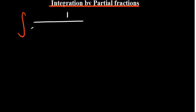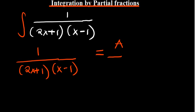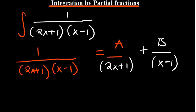Let's say you have the integral of 1 divided by (2x+1)(x-1). We're able to resolve this fraction into its partial fractions. Forgetting about the integral first, we have 1 over (2x+1)(x-1) which we equate to A over (2x+1) plus B over (x-1). We're trying to find what A and B are so that when we add them back we get the original fraction.